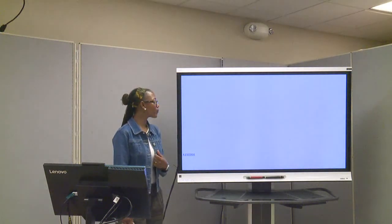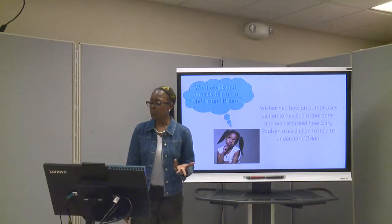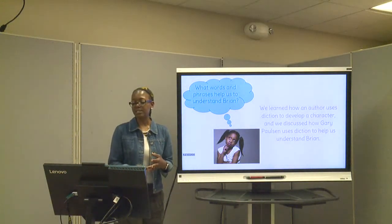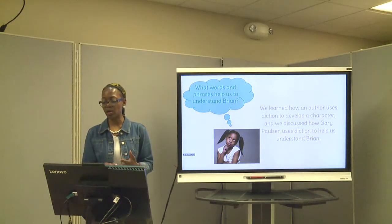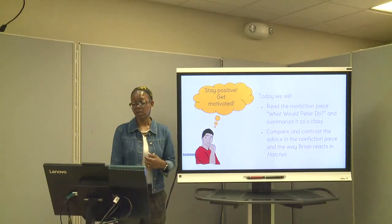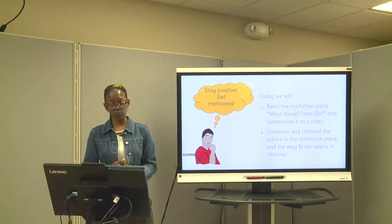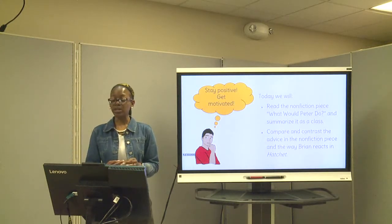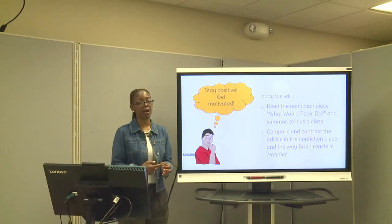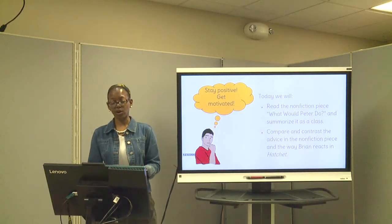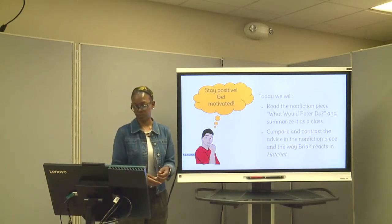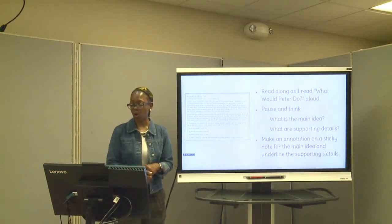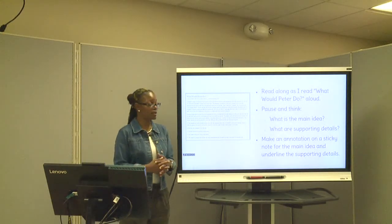We've already learned how the author uses diction to develop a character, and we discussed how Gary Paulsen uses diction to help us understand what Brian is doing in the text. So today we're going to read a nonfiction piece, 'What Would Peter Do?' by Peter Cumberfeld, and we're going to summarize some of the text. We're going to compare and contrast the advice in the nonfiction piece and the way Brian is reacting in Hatchet.